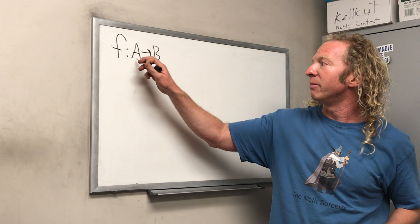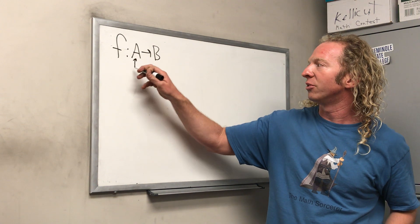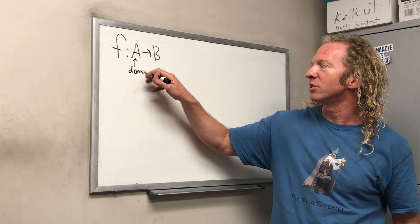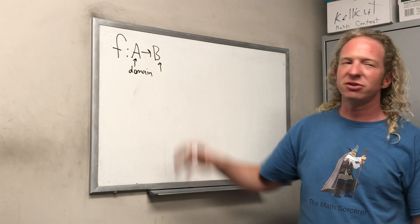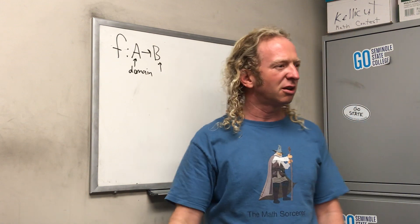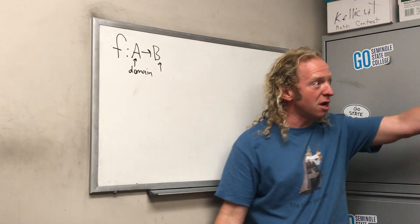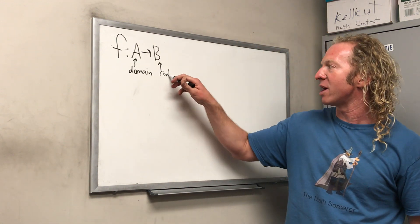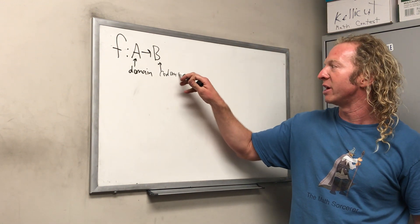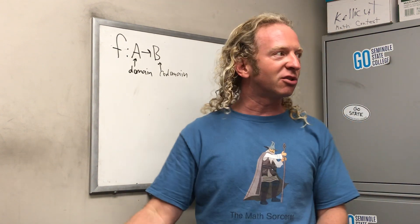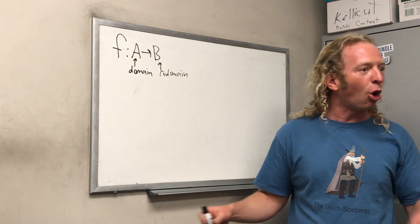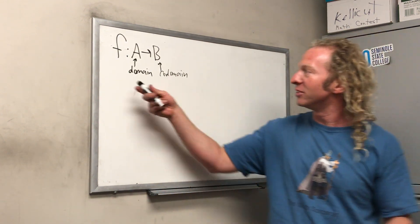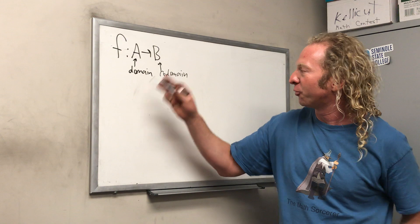A here has a name: A is called the domain. Does anyone know what B is called? Codomain. Yes — B is called the codomain. So A is called the domain and B is called the codomain.